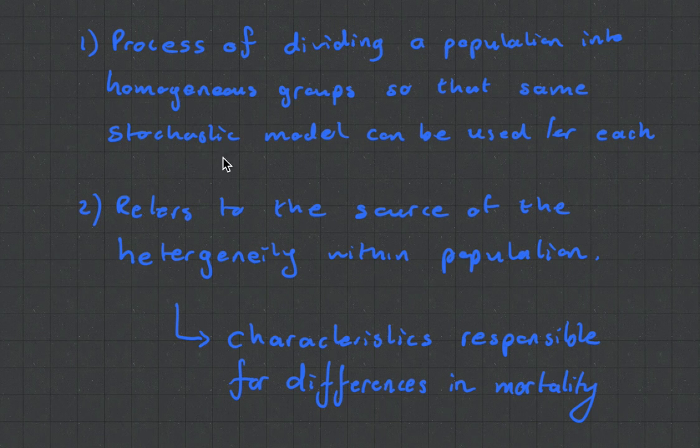Don't worry too much about what a stochastic model is now if you don't know. Just what you need to know is homogenous means the same. It's like a fancy Latin word for the same and its opposite is hetero, heterogeneity, and that means a mix. And that's what the second definition of selection refers to: the source of the heterogeneity within a population and it is the characteristic which is responsible for the differences in mortality.